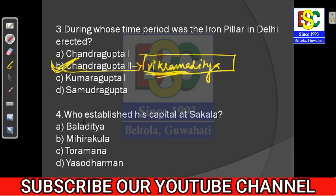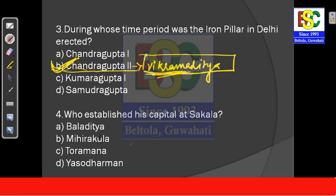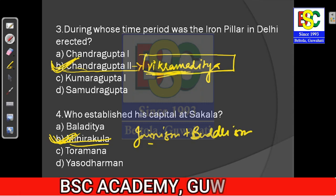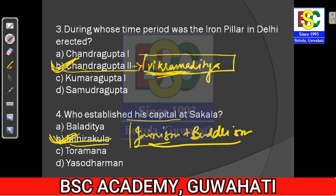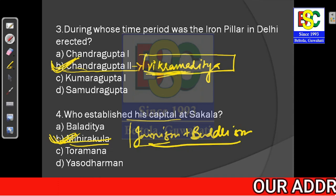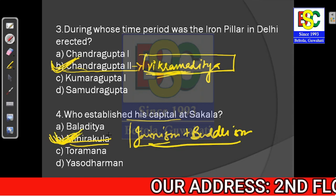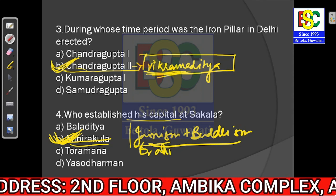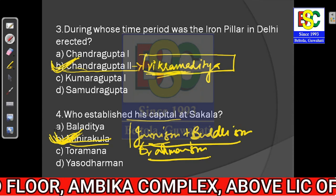Question number four: Who established his capital at Sakala? The answer is option B — Mihirkula. He is a very important king. When we study Jainism and Buddhism in ancient history, there is a section on how Buddhism declined. Mihirkula was one of the kings who killed many Buddhist monks because he wanted to end Buddhism and bring back Brahminism. The answer is option B — Mihirkula.